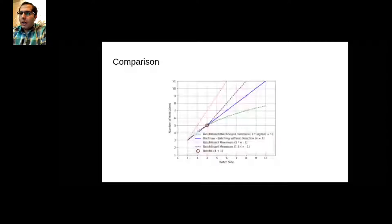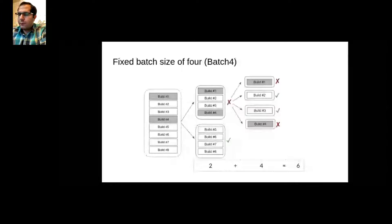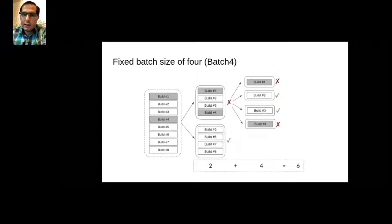The Batch Four process has two batches of four builds. The second half passes, the first half fails. Build number one and build number four are failed. In total, we need six executions to isolate them — six versus nine before when doing normal bisection. So this is much better.